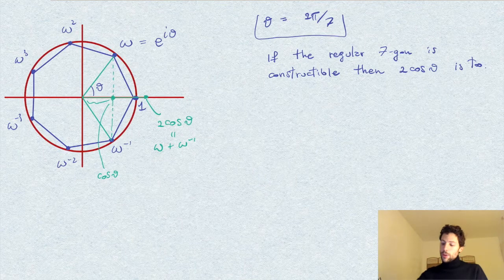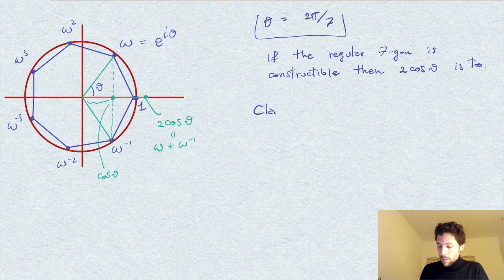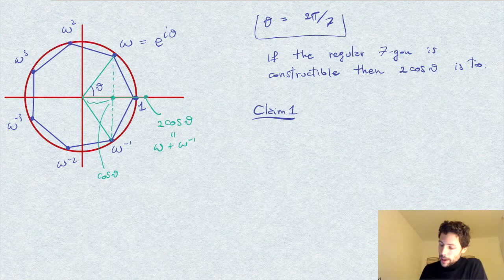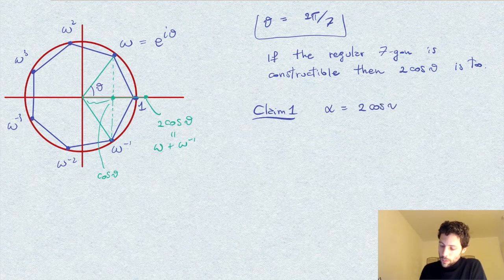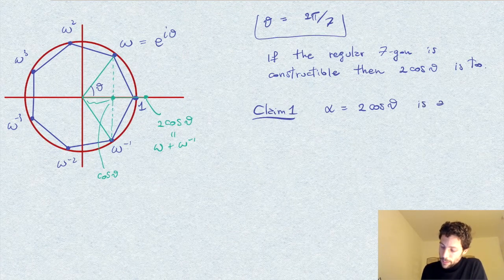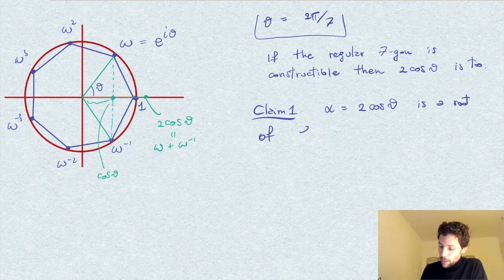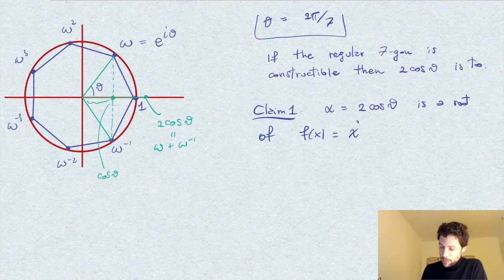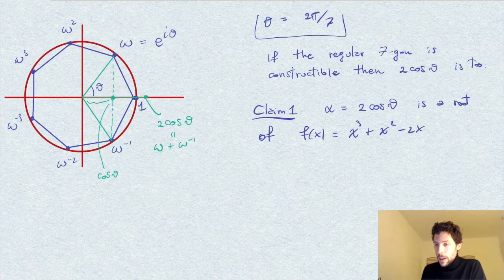In order to prove that 2cos(theta) is not a constructible number, we proceed with the following steps. My first claim is that this number is a root of the following polynomial given by f(x) = x³ + x² - 2x - 1.